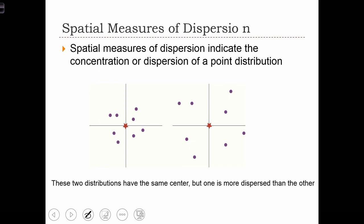Spatial measures of dispersion indicate the concentration or dispersion of a point distribution about its mean center. Both of these point distributions have the same mean, but you can see that the dispersion around the mean in this case is much smaller than the dispersion around the mean in that case.